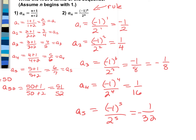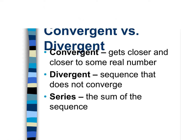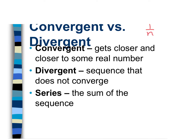Next we have more vocabulary: convergent and divergent. A sequence is convergent when it gets closer and closer to some real number. For example, 1/n — plugging in 1, 2, 3, 4 — the sequence gets smaller and smaller, slowly converging to zero. When a sequence is divergent, it does not converge; it keeps growing toward infinity.